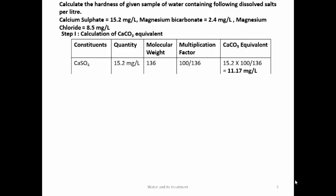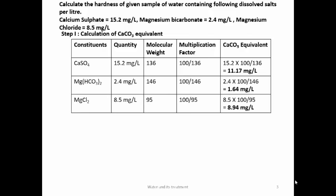For calcium sulphate: quantity is 15.2, molecular weight = 40 + 32 + (16×4) = 136. Multiplication factor = 100/136. CaCO₃ equivalent = 11.17 mg/L. Similarly, CaCO₃ equivalents are calculated for magnesium bicarbonate and magnesium chloride.